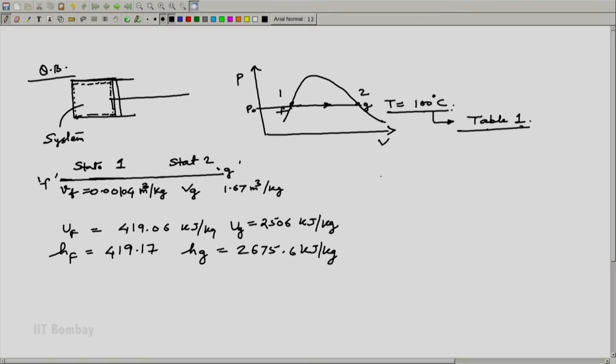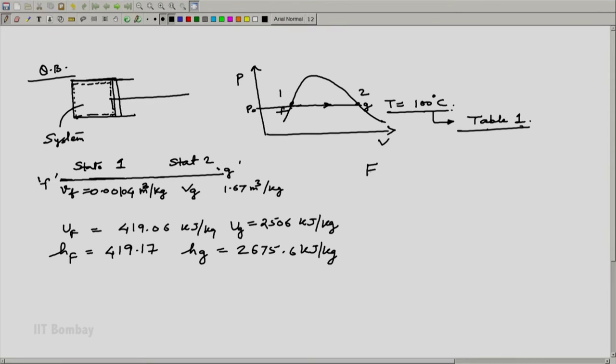Now we understand that this process of expansion is a constant pressure process. Expansion work W_expansion is equal to, because this is a constant pressure process, P times V2 minus V1 times M, and V2 is nothing but VG, V1 is nothing but VF.